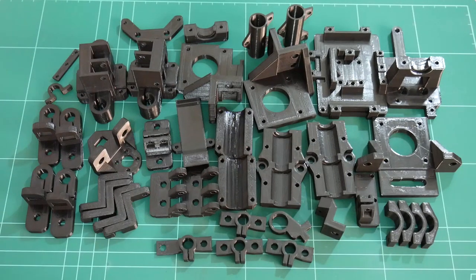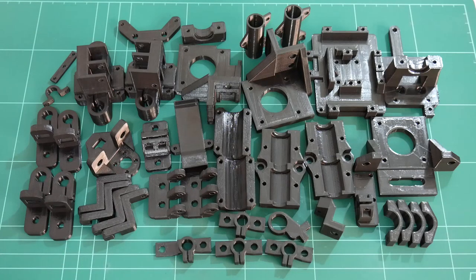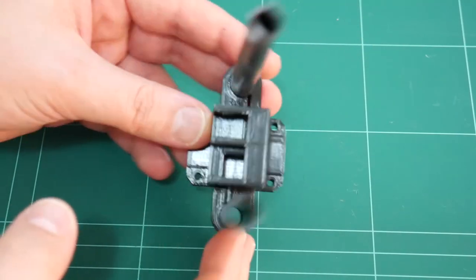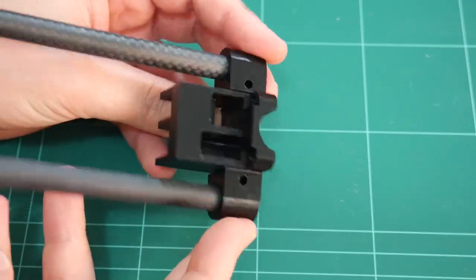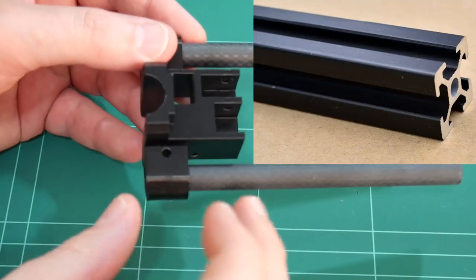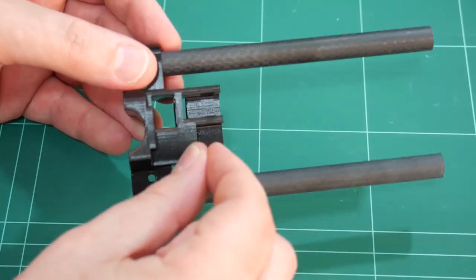We can't forget how good carbon fiber would look with black plastic parts as your hypercube set. Couple that with black 2020 aluminum extrusion and the black belts running through these parts - that's a pretty stealthy hypercube you'll have there.